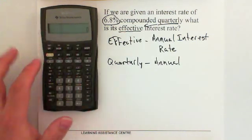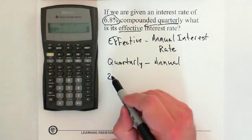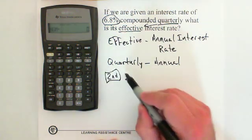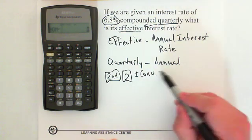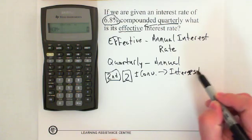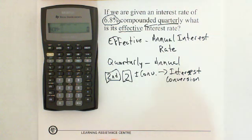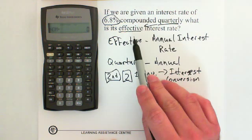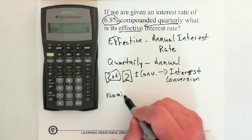To do that we go Second Function, iConversion — that's Second 2. This opens our interest conversion function. The first thing that pops up on the screen is NOM, nominal. Since we want to change it from quarterly to effective, the 6.8% is going to be our nominal interest rate.